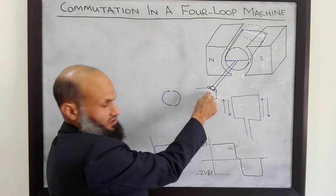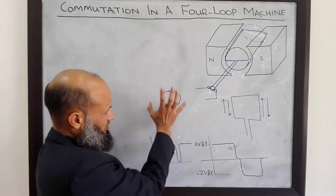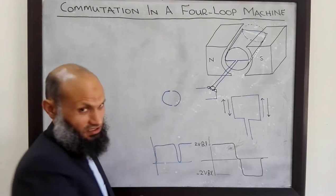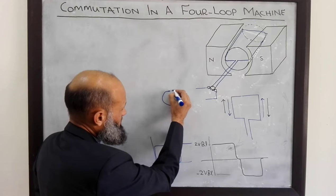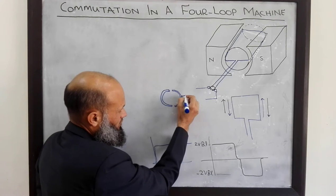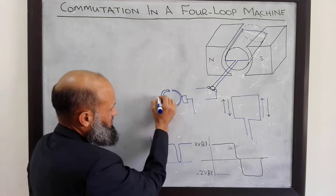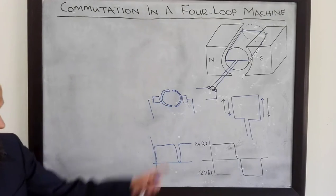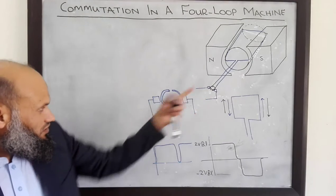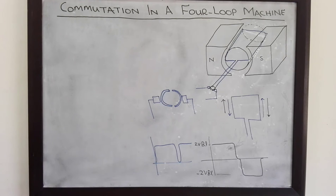If we look at this split ring from the front, it will look like this — half circular rings — and brushes are placed which are in electrical contact with this split ring. This split ring from the front looks like this. So let's talk about the process of commutation in a DC machine with four loops.